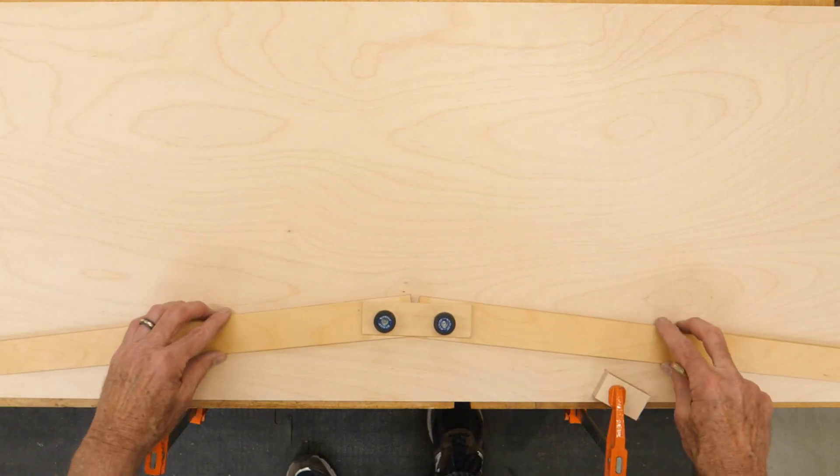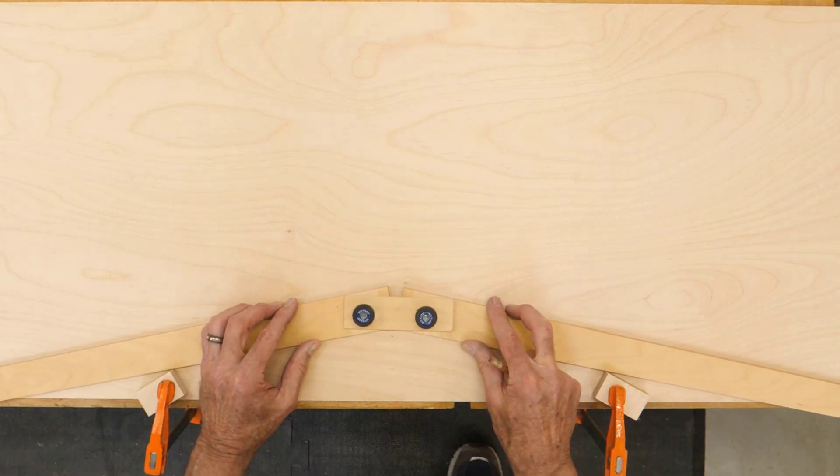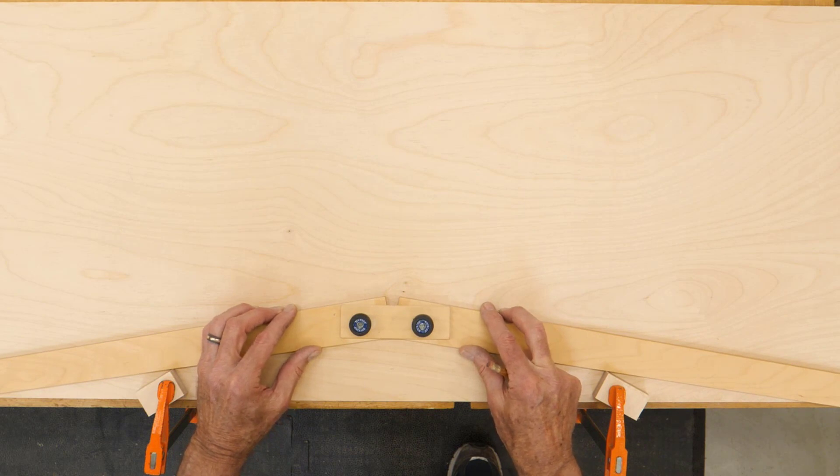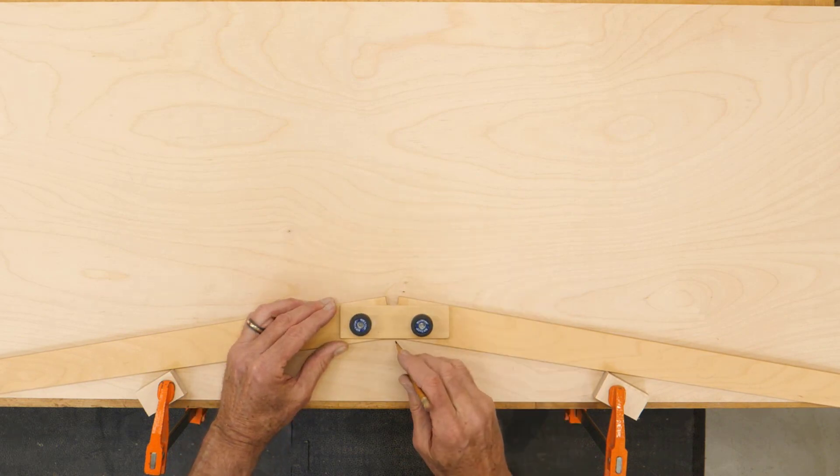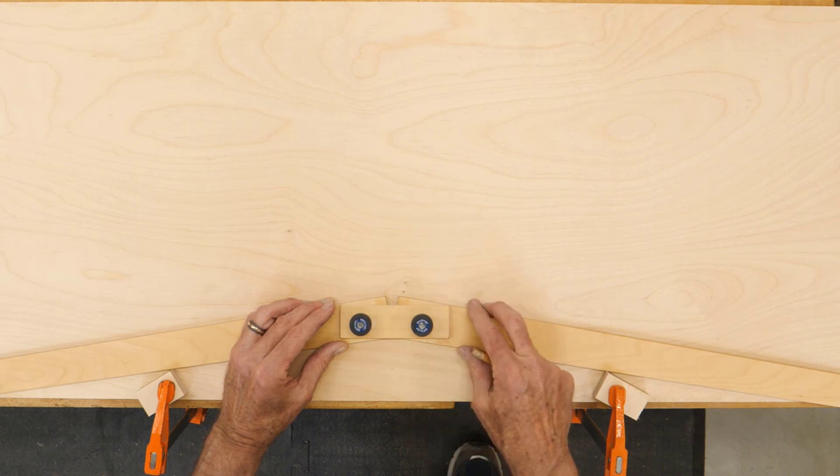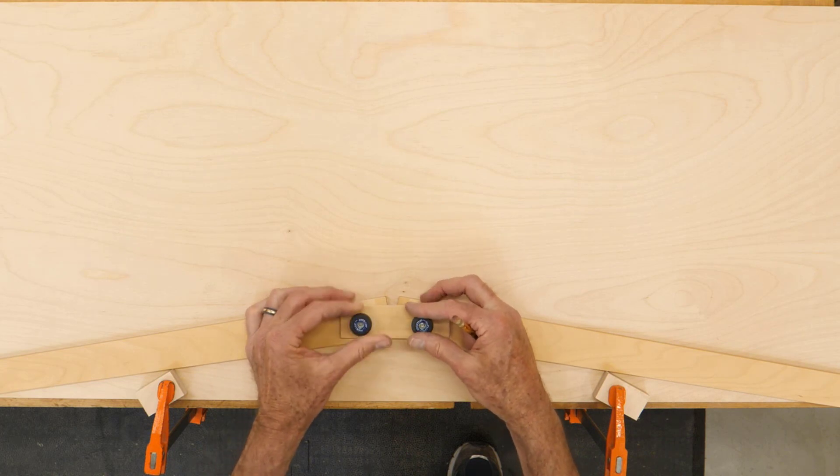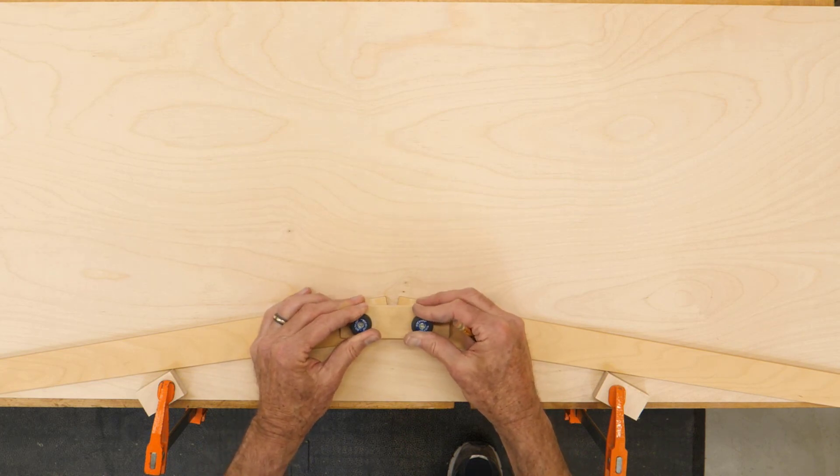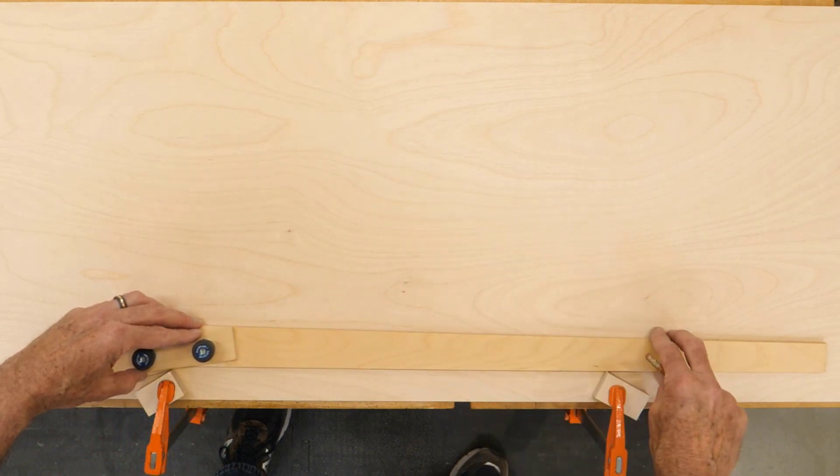I'll put these so they're sitting on my pivots here, and I'm going to align this so that my pencil fits right in there. Tighten those up, and I'll slide this to one side.